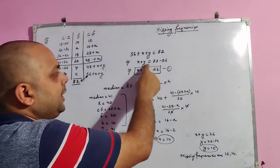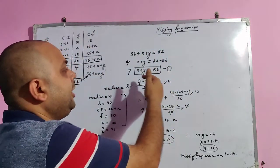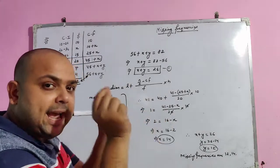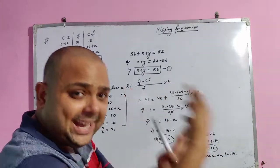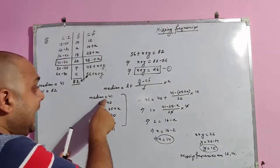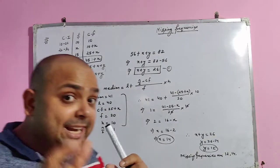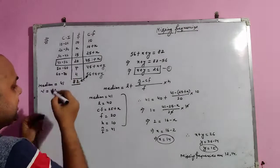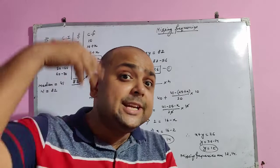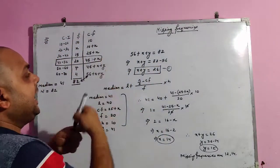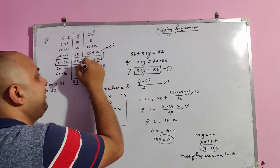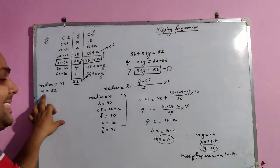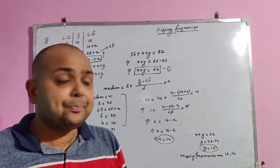We have x + y = 26. The median formula is: Median = l + ((n/2 − cf) / f) × h. Since the median is 41, the median class is 40–50 (because the median value must lie within the interval). The lower limit l = 40, cf of the preceding class = 25 + x, f = 20, h = 10, and n/2 = 82/2 = 41.